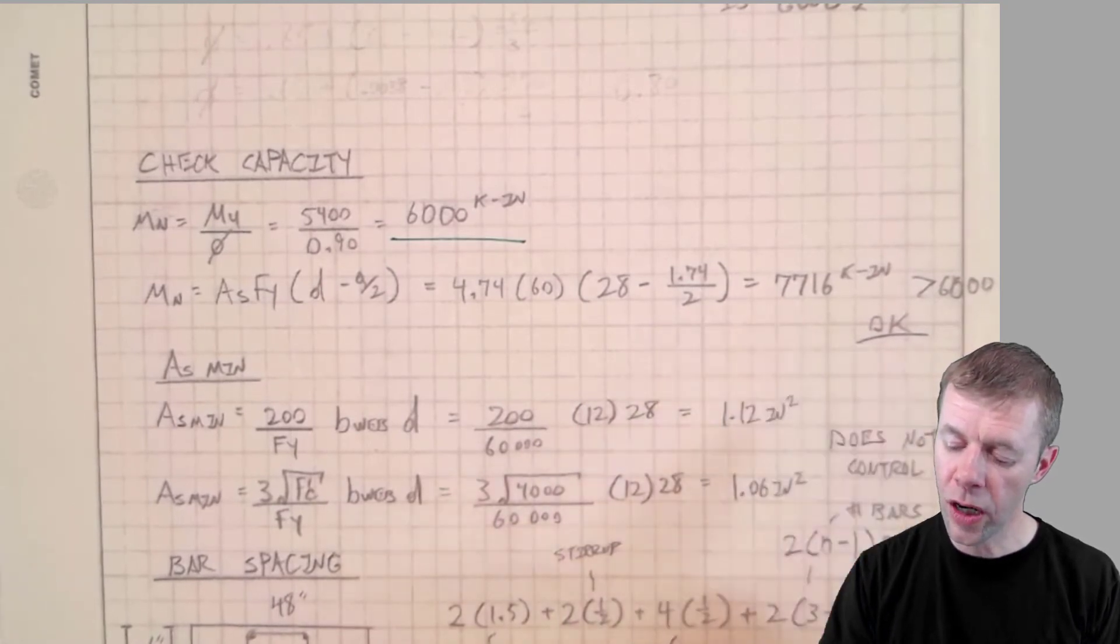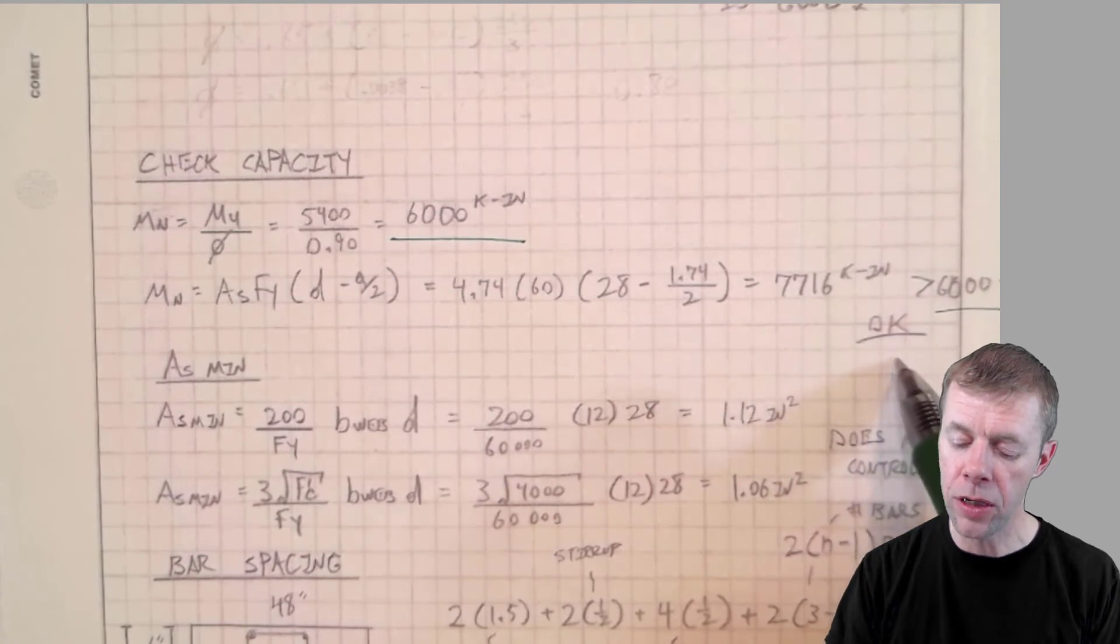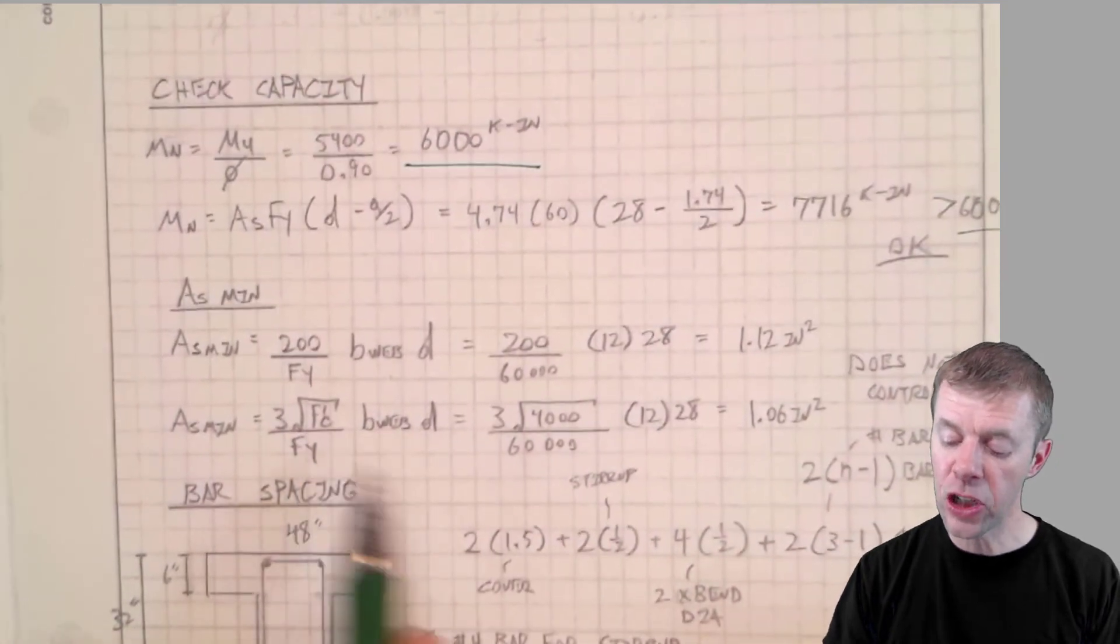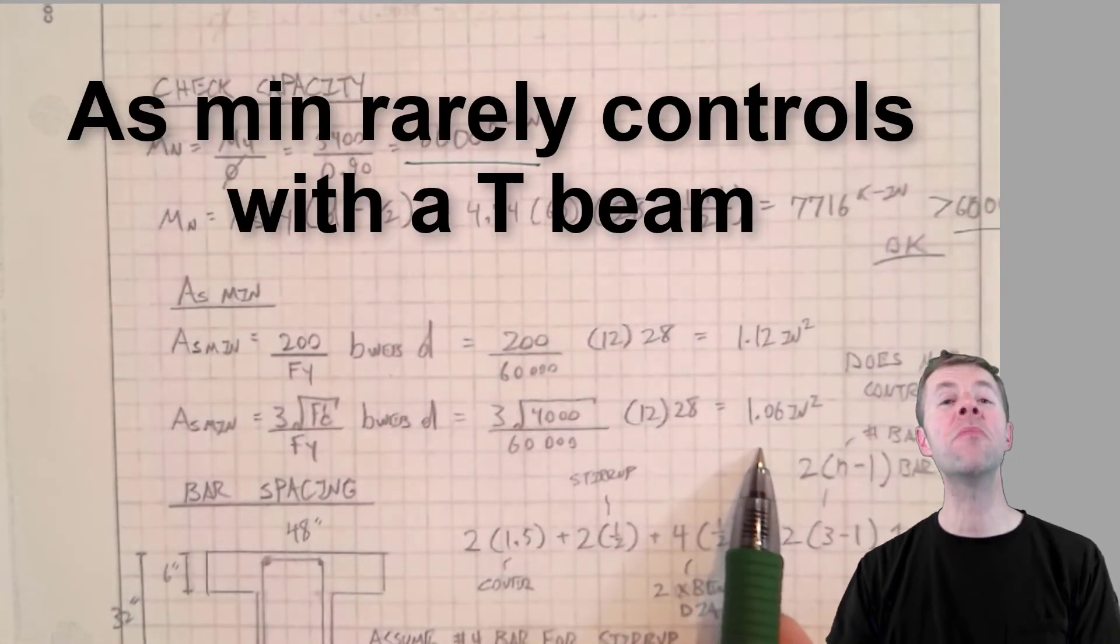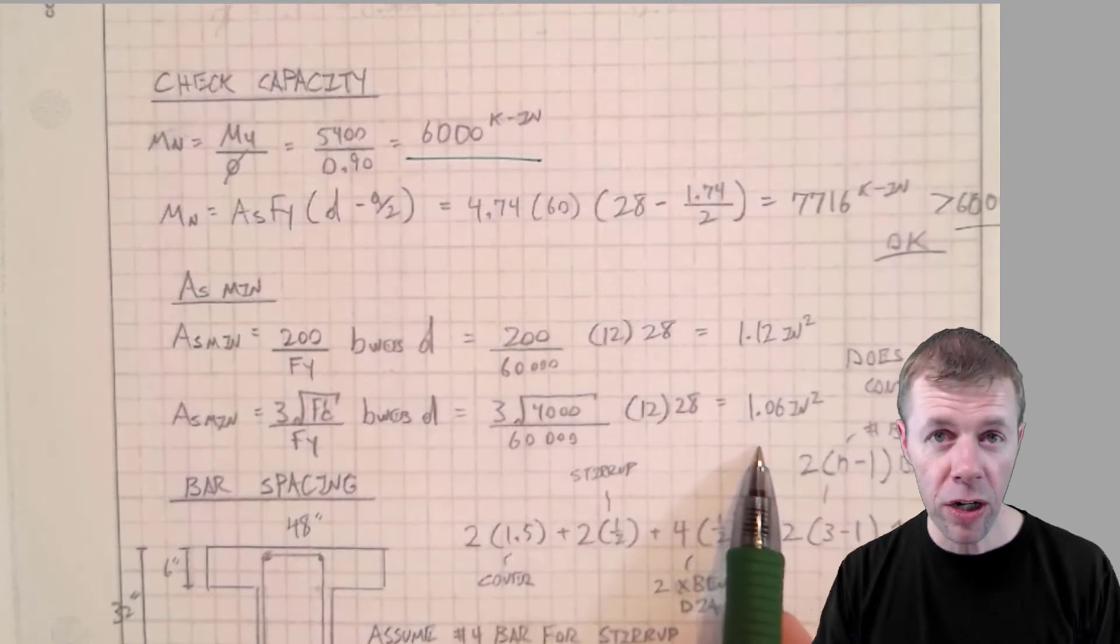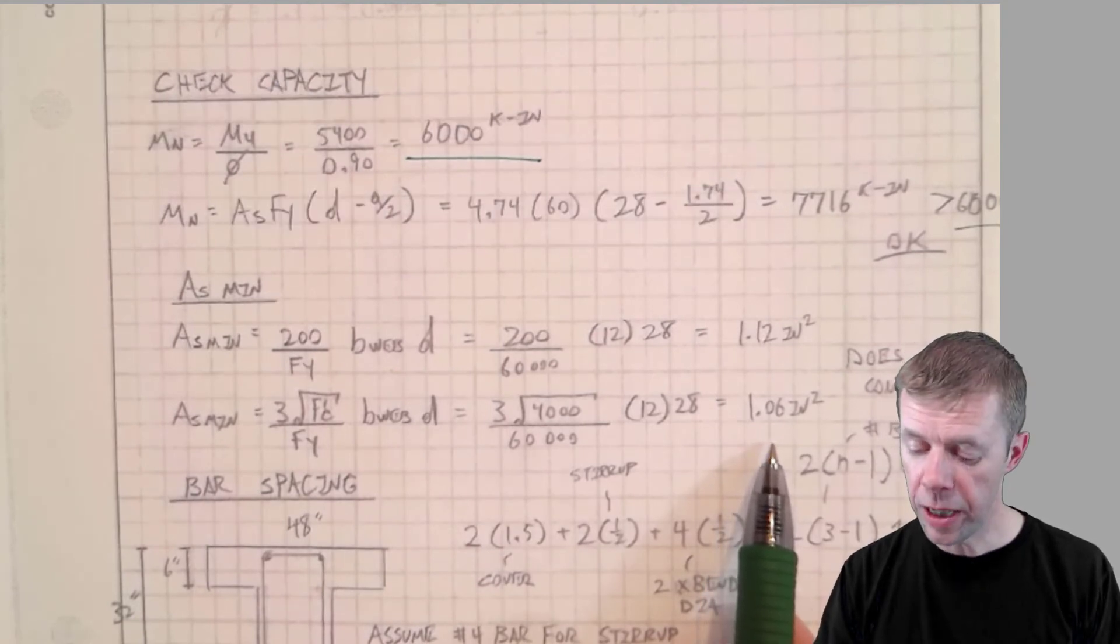This is awesome which is greater than 6,000. I'm looking pretty good. I solve for my area of steel. It would be a shock if your area of steel minimum controlled for a T-Beam. Does not control.